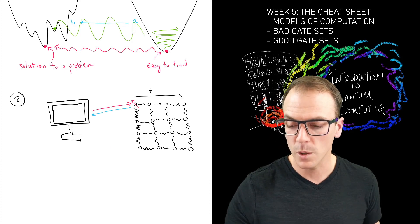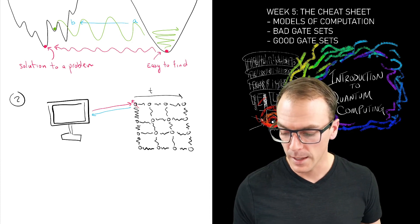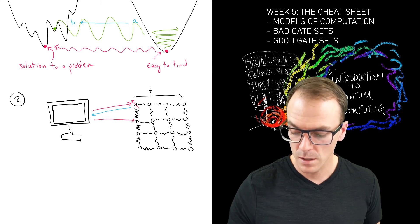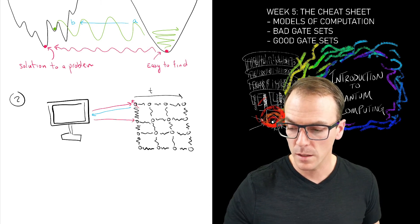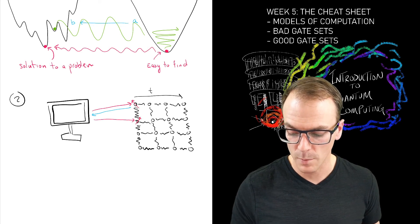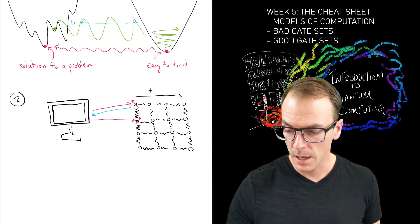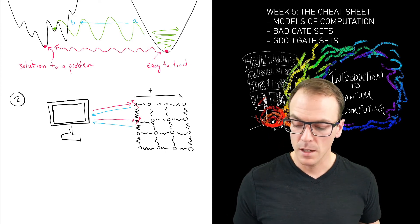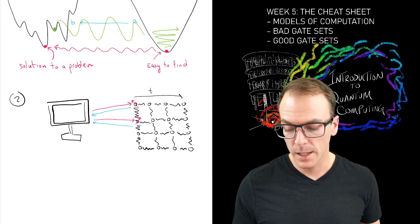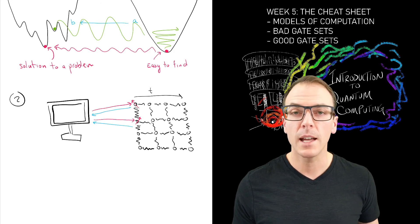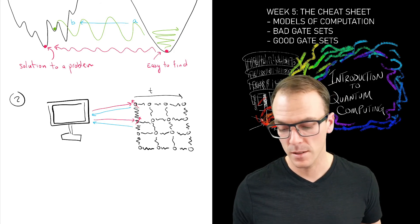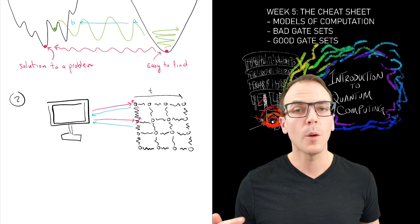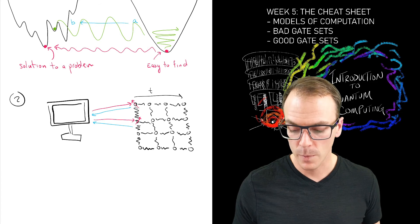So what happens is I send some message to the first qubit that says measure in this particular basis, and the result of that measurement gets sent back to the computer. The computer does a small computation and then sends the message to the next qubit. That one is maybe performed in the same basis or maybe another basis, and the result of that measurement is sent back.